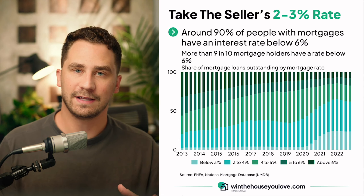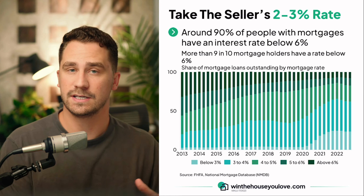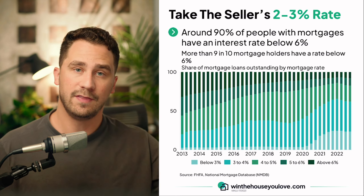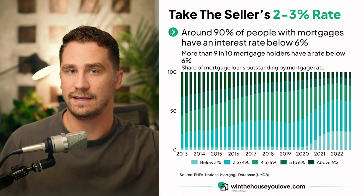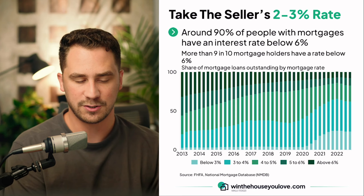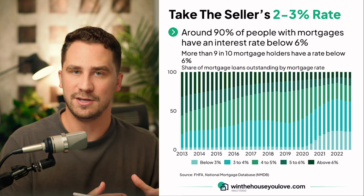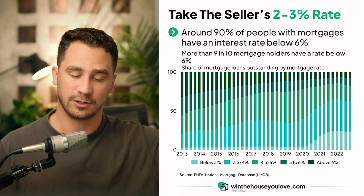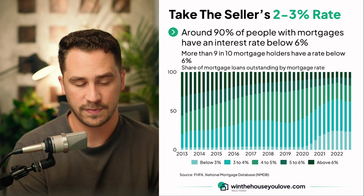If you're looking at buying a home, it's very likely that you're going to be looking at around a 6% interest rate for your mortgage. And the home that you're looking at buying, the seller right now likely has less than a 6% interest rate on their current mortgage. I'm going to show you a strategy you can use to take over the seller's lower interest rate, and this is called a loan assumption.